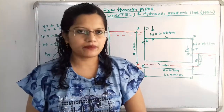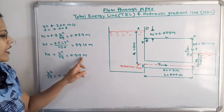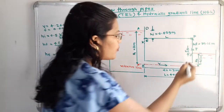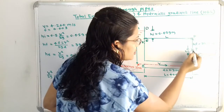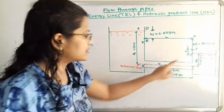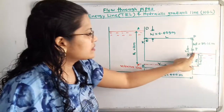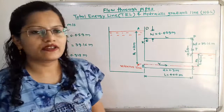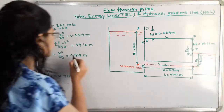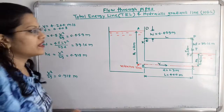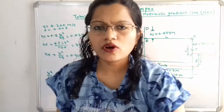When water enters from point C into the second tank at point D, there is a head loss due to exit of the pipe. We calculated he = 0.918 meters. From point I, we go vertically downward to point J, where point J meets the water surface level in the second tank. The distance I to J equals he = 0.918 meters.